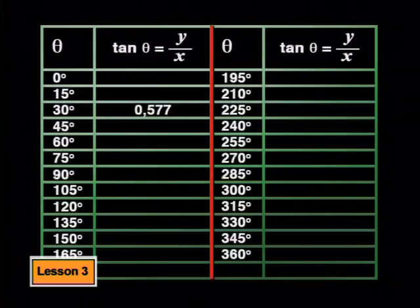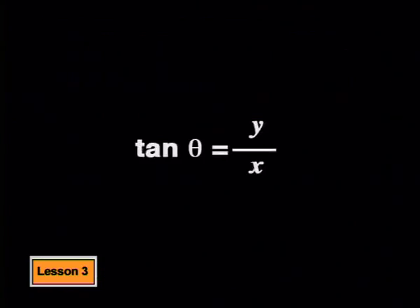For 30 degrees, tan theta is 0.577 and for 75 degrees, tan theta is 3.732. We won't need to calculate y divided by x for each value of the angle since the value for tan theta is constant for each angle theta. The values are stored in our calculators. So, we can just let our calculators do the work.